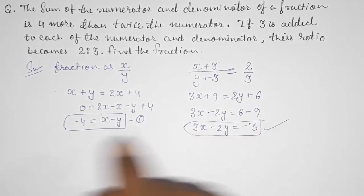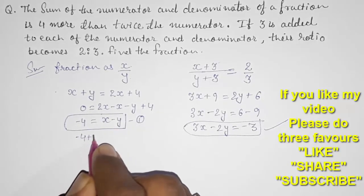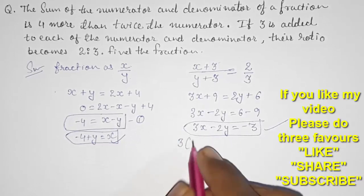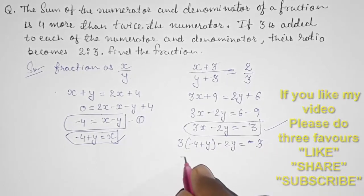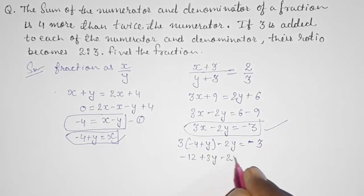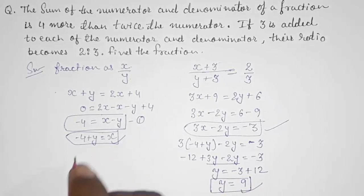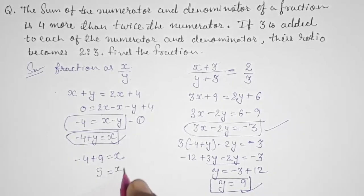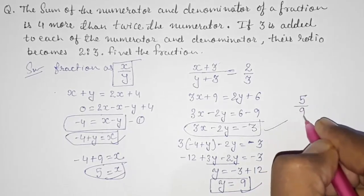Using substitution: from equation one, x = y − 4. Substituting into equation two: 3(y − 4) − 2y = −3, so −12 + 3y − 2y = −3, giving y = 9. Substituting back: x = 9 − 4 = 5. So the fraction is 5/9.